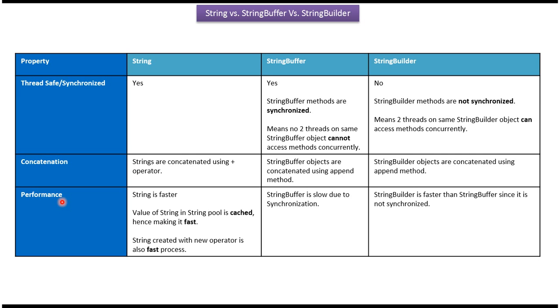Property is performance. String is faster. String buffer is slow due to synchronization. String builder is faster than string buffer since string builder is not synchronized.